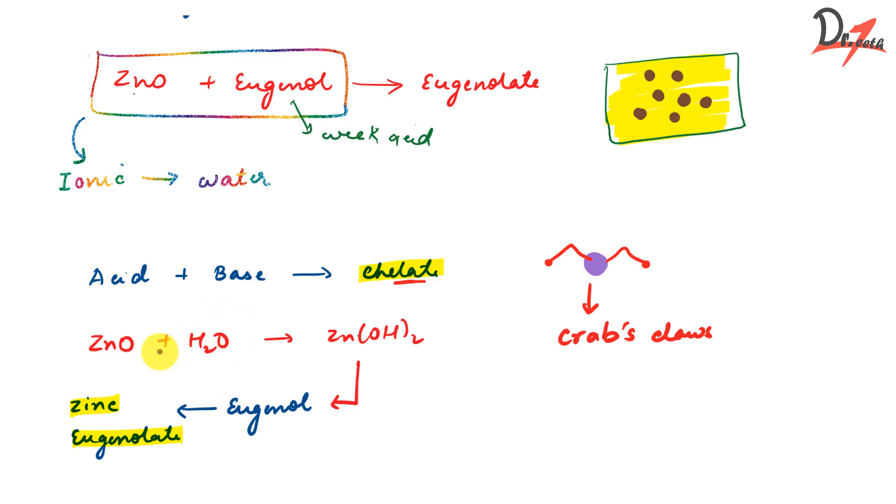Now, as we can see here, this reaction requires an ionic medium to proceed. Now, what is the role of water in the setting reaction? So the setting reaction, as we know, it is ionic in nature and it requires an ionic medium. So water increases this ionic nature. So the acid will react with the base and it will form a salt, which is zinc eugenolate.